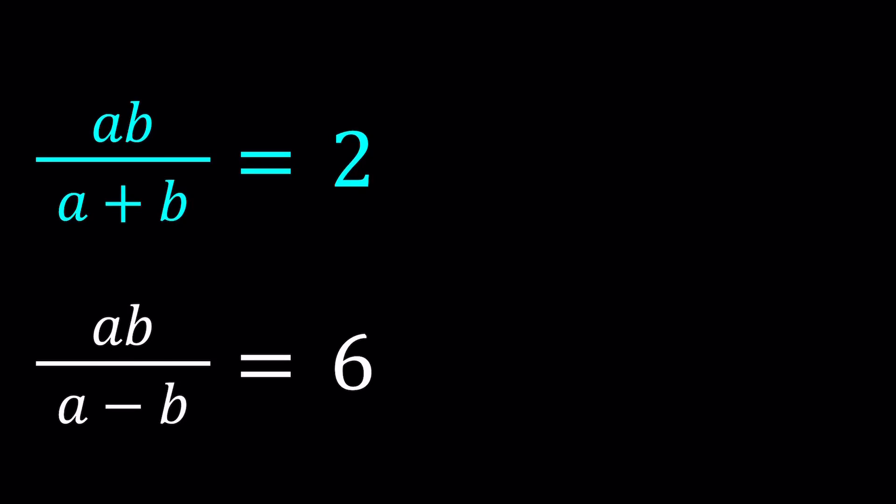Hello everyone. In this video, we're going to be solving a system of equations in two variables. We have two equations and two variables, so that should be solvable. We have ab divided by a plus b, and that's equal to 2. We have ab divided by a minus b, and that's equal to 6.